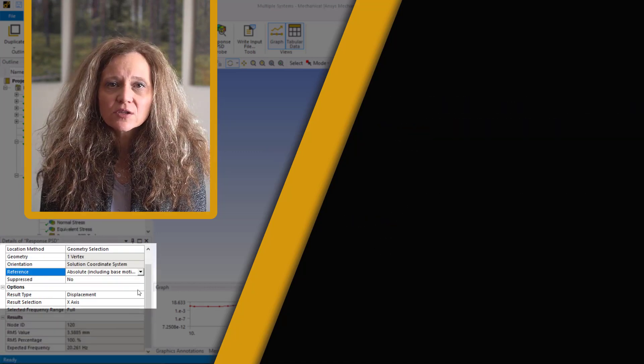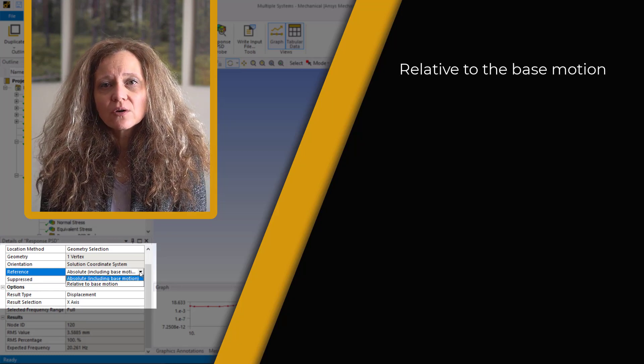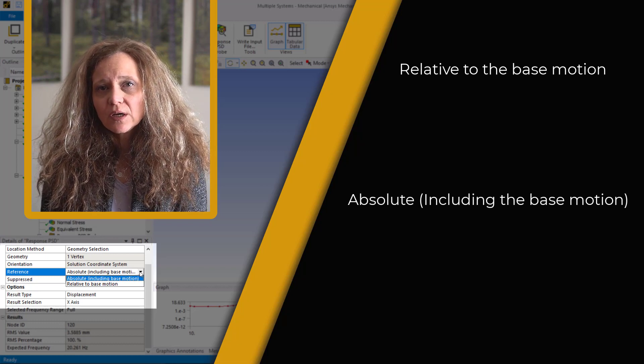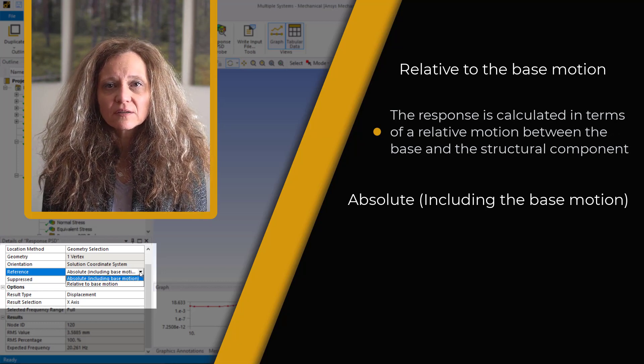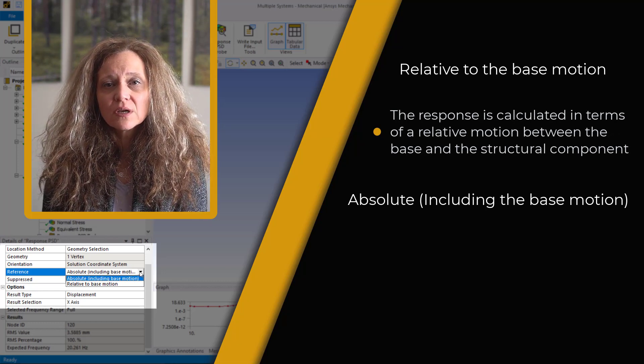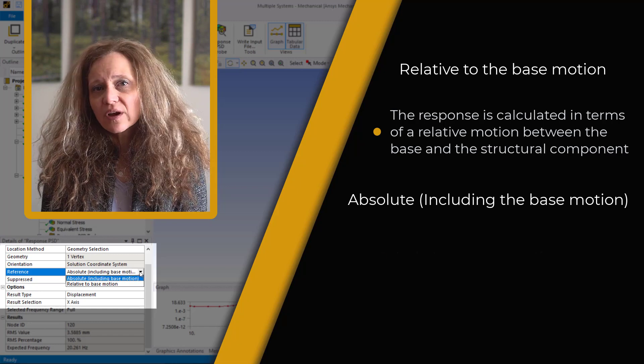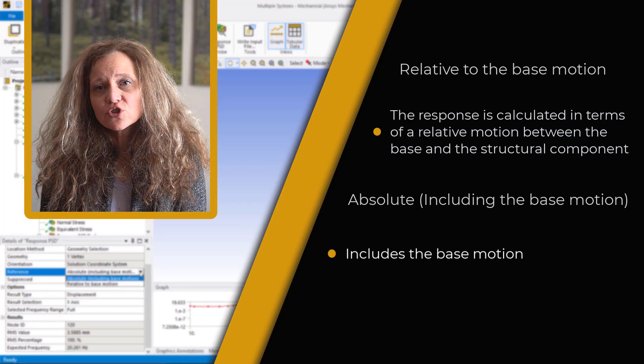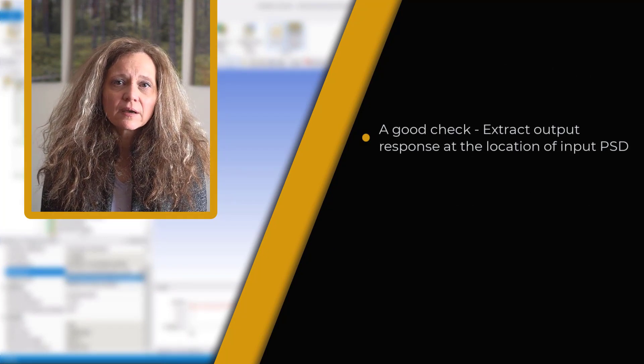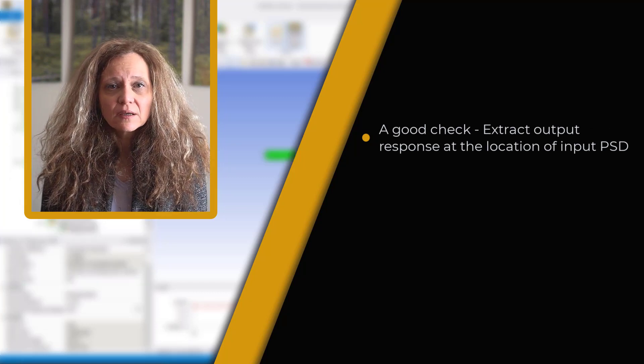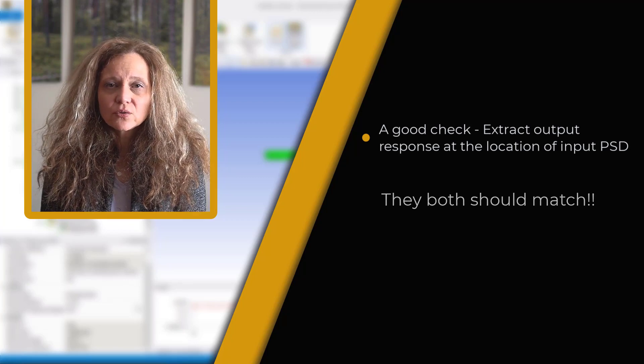Notice in the details of response PSD that the reference can be relative to the base motion or absolute which will include the base motion. For relative motion, the response of any location in the structural component is calculated in terms of a relative motion between the base and the structural component and vice versa, whereas the absolute reference includes the base motion. A good check of proper setup is to extract the output response RPSD at the location of the input PSD. The input PSD and RPSD curves should match. Let us see how to do this in our example.